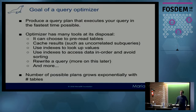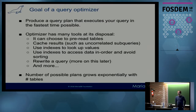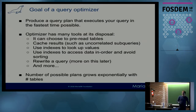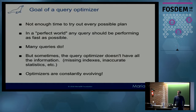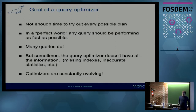We have different tools to do that. We can choose to cache some data before we compute the full result, we can do index lookups to get data faster, or we can try to rewrite a query in a more efficient manner. The problem is that the number of possible plans grows exponentially — actually factorially — with the number of tables. In a perfect world, the optimizer should give you the best result all the time, but there are certain instances where it works quite badly.